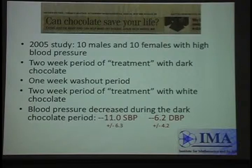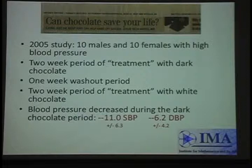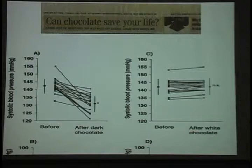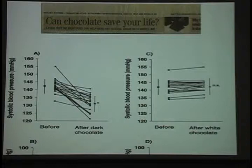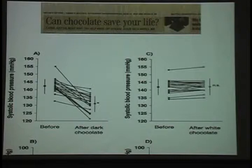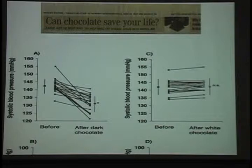An 11-point drop in blood pressure is pretty good — most of you don't have to worry about this yet, but your parents would be pleased, especially if they got to eat a big chocolate bar every day. One of the cool things about this experiment is that every patient serves as their own control. You're not biasing things by having healthier patients in one group, because every patient ate first dark then white chocolate, or vice versa — each patient compared to themselves.